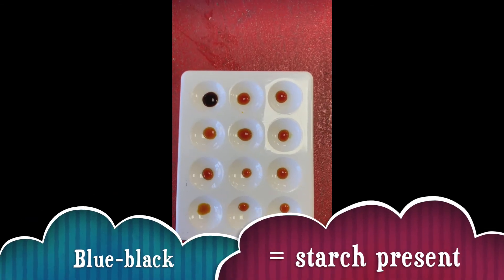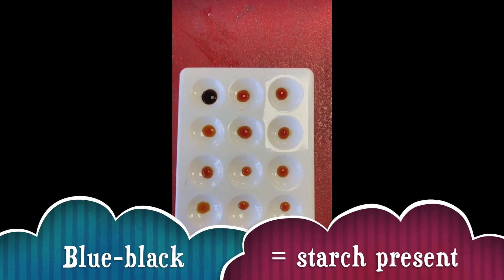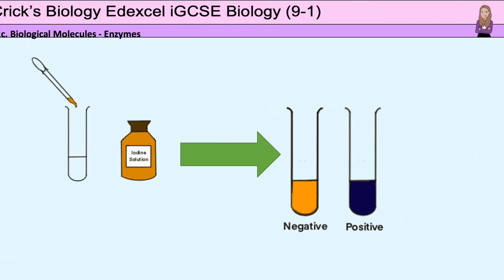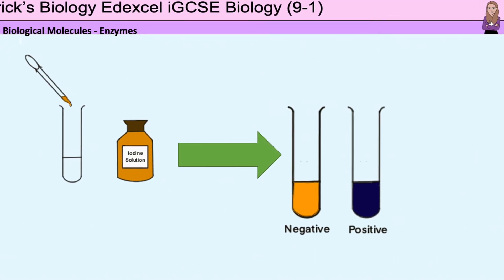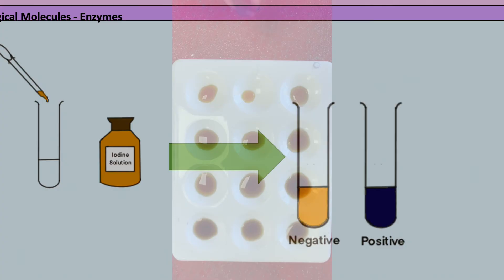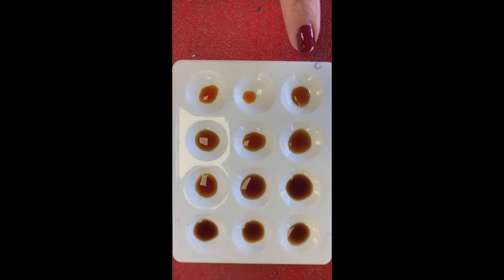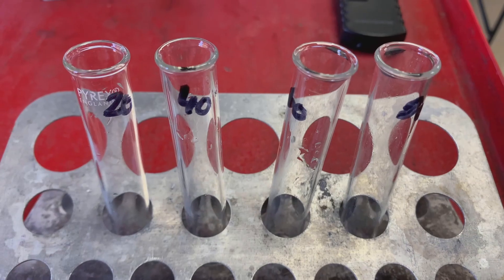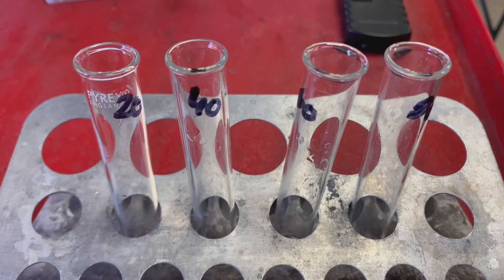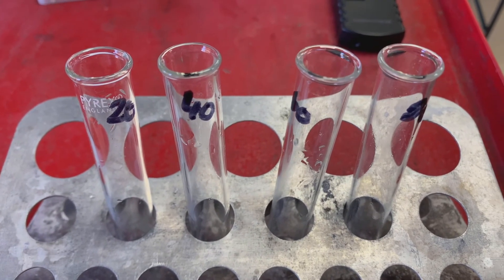As you can see by the colour, there is still starch present. Samples will be tested with iodine every minute until there is no further change in colour of the iodine solution. When iodine solution stays orange, there is no starch left — it has all been broken down by the amylase. At 0 degrees this took 10 minutes. Then repeat this process with the 20, 40, 60, and 80 degree solutions.